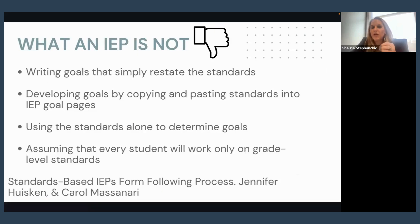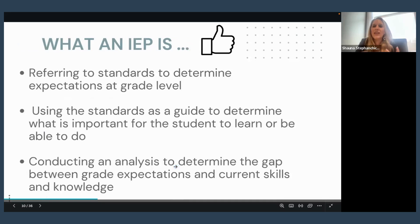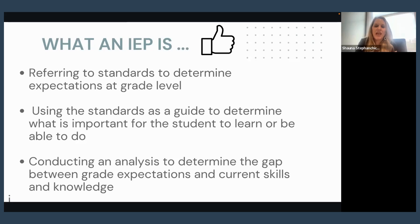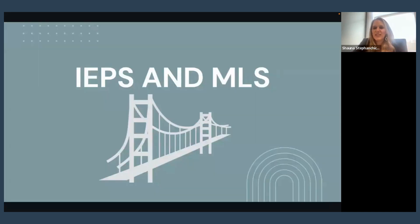When we talk about an individual education plan — what is it not? It has to be aligned to standards, but it's not just writing goals that simply restate the standards. It's not copying and pasting the standards into them. It's not just using standards alone to determine goals or assuming every kid is going to work on those goals. What is it and how does it connect to standards? An IEP should be referring to grade-level standards when being created, using standards to help determine important learning goals, and constantly analyzing what knowledge and skills the student should know if they're on grade level.